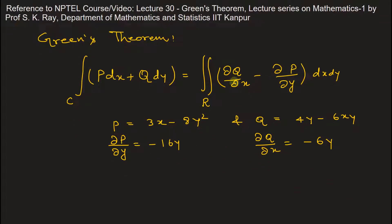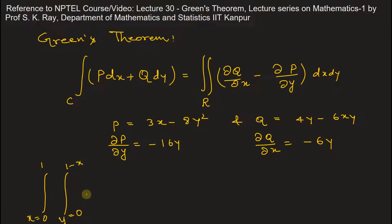Substituting into the equation, we can write the double integral with x going from 0 to 1, and this is the bounded region, y going from 0 to 1 minus x. So dQ/dx is negative 6y, minus dP/dy which is negative 16y, giving us the integrand, and we integrate dx dy.